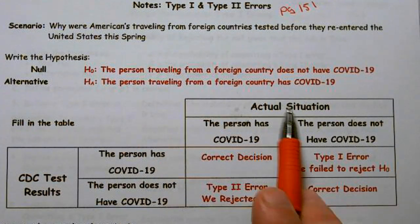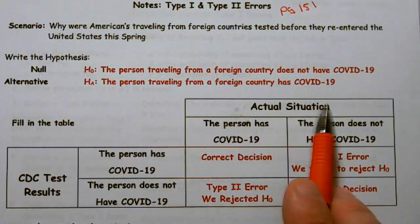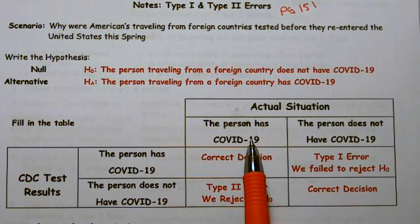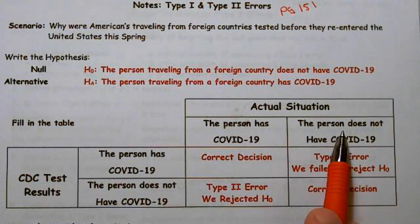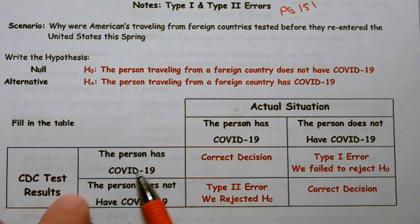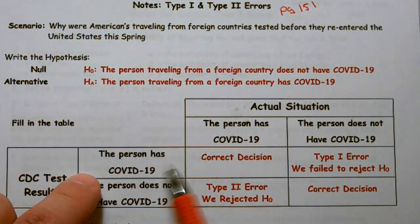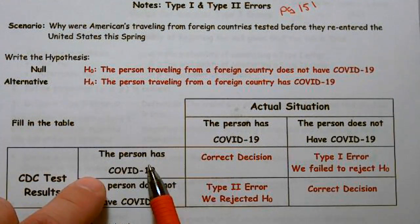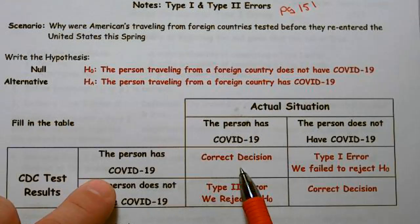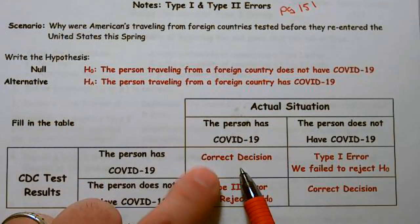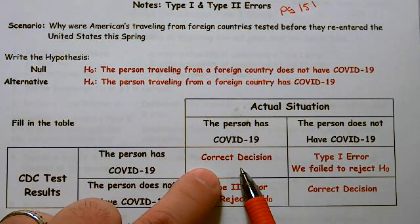So this is the reality. The reality is the person has COVID, and the instance when they don't. So the CDC runs a test, and the person has COVID, and we say they have COVID — great, we made a correct decision.